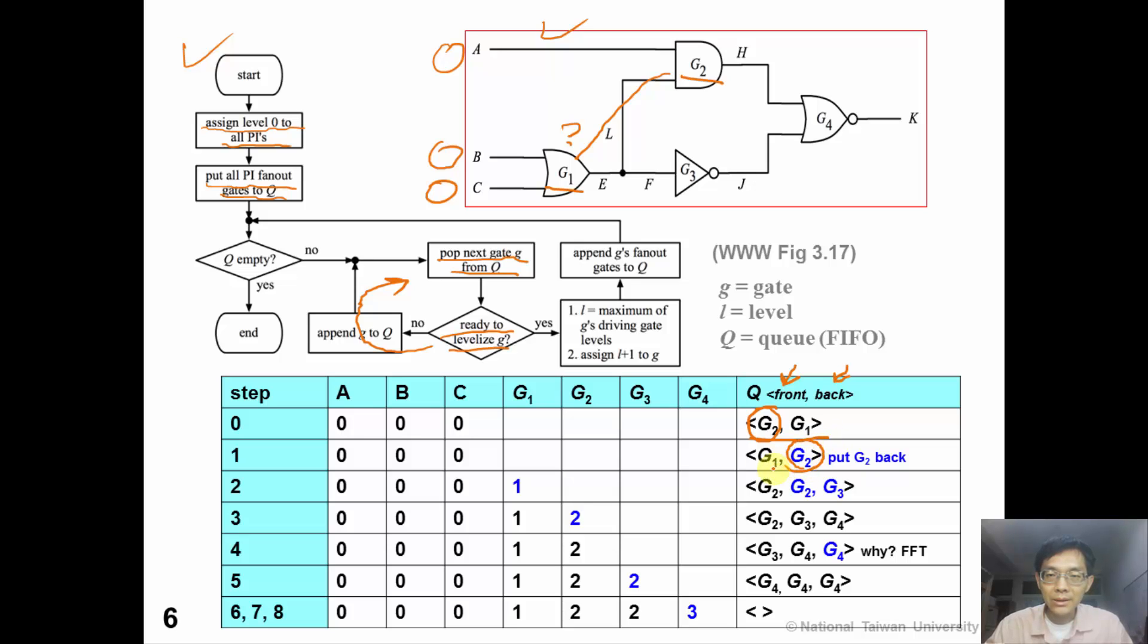And the next gate pop out from the queue is G1. G1 is now ready for levelization, since both B and C have been levelized. In this algorithm, L represents the maximum of G's driving gate level, which is zero. So we assigned L plus one to gate G1. So now we have levelized G1 to level one. And we append G's fanout gate to the queue.